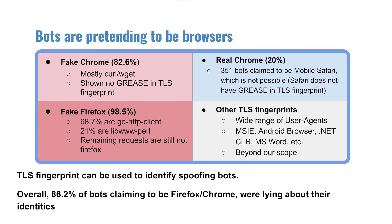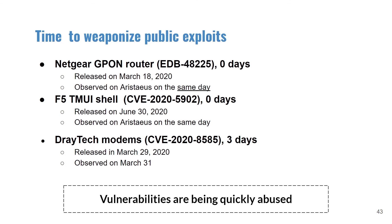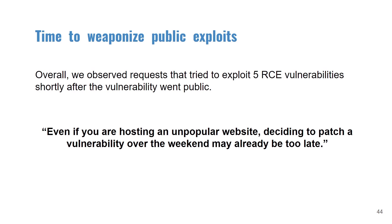On the security vulnerability aspect, we found that public vulnerabilities are quickly being abused. For example, a vulnerability in a Netgear router was released on March 18th and we observed exploitation attempts just a few hours after it went public. Another exploit that went public on June 30th was abused the same day. Overall, we observed requests attempting to exploit five remote command execution vulnerabilities shortly after they went public. This reminds us that even for an unpopular website, deciding to patch a vulnerability over the weekend may already be too late.